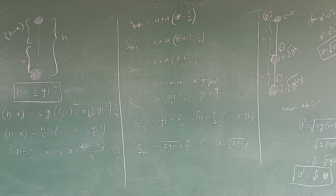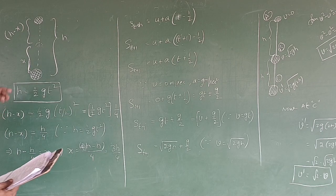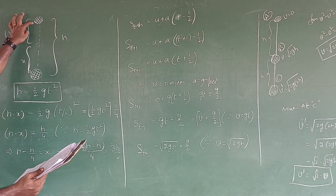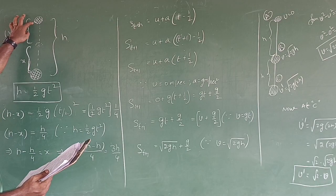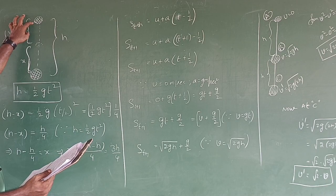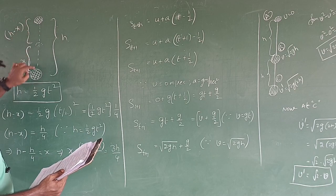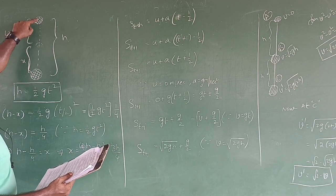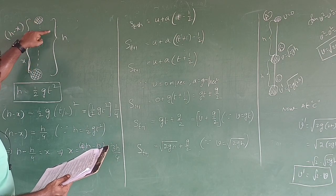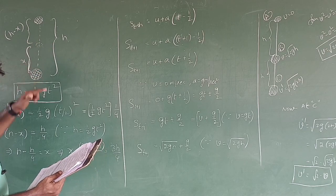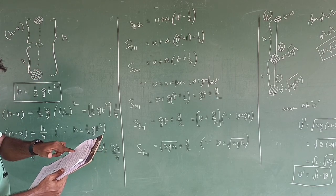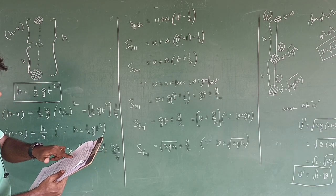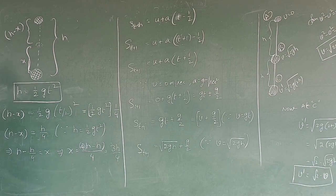Go through that previous worksheet. In that worksheet, a body is dropped from height h above the ground which takes 3 seconds to reach the ground. From the starting point to the ground it took t time. Now what is being asked is the position of the body after t by 2 seconds.